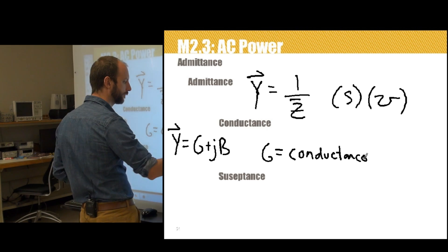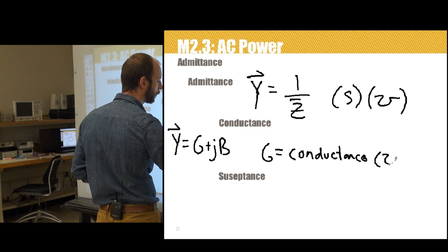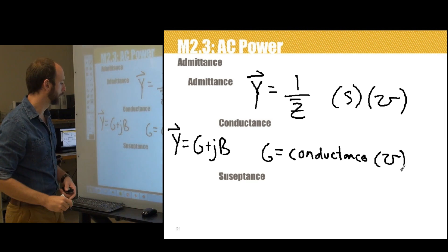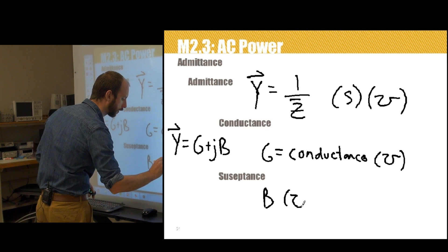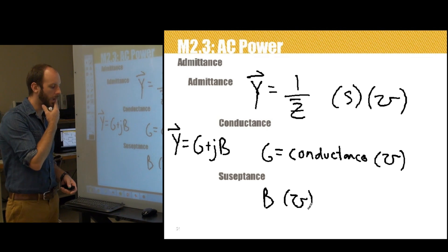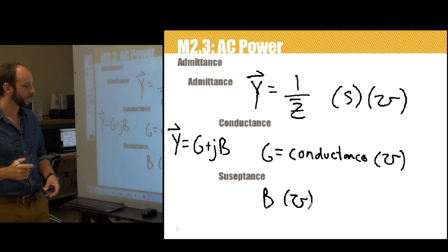It's measured in Mohs. And B is susceptance, also measured in Mohs.